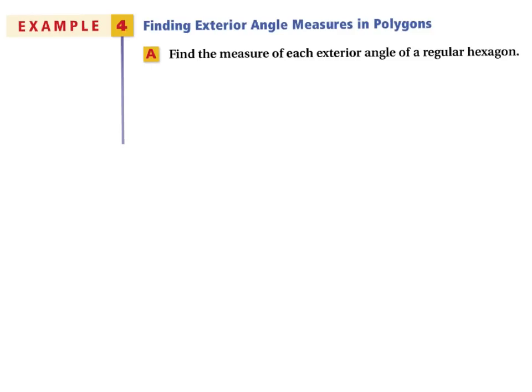Example 4a: find the measure of each exterior angle of a regular hexagon. A hexagon has 6 angles. We know the sum of all exterior angles is always 360°. So we take 360° ÷ 6, which means each exterior angle is 60 degrees.